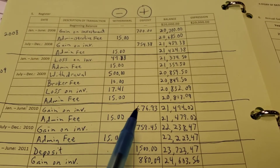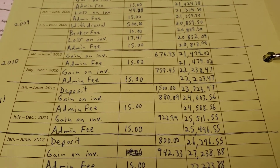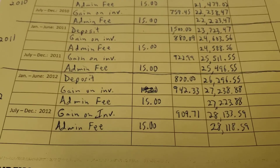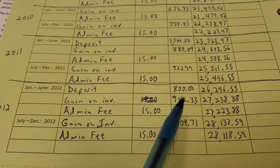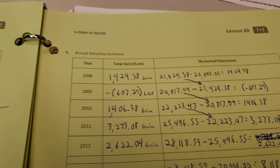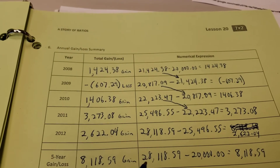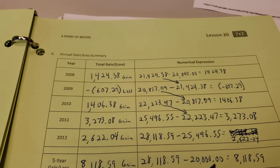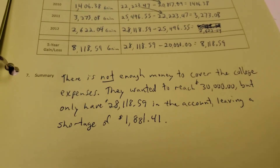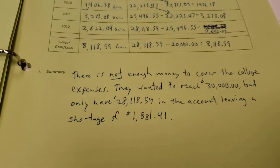2010 was a better year — they gained on their investments, with deposits adding back to the totals, bringing them to $22,347. 2011 was another great year: they had an extra deposit and a couple of big gains, reaching $25,496.55. 2012 was also good, with an $800 deposit and investment gains, ending at $28,118.59. Over the full five years, they gained $8,118.59, but their goal was $30,000, so they came up a little short.